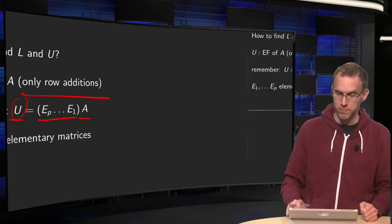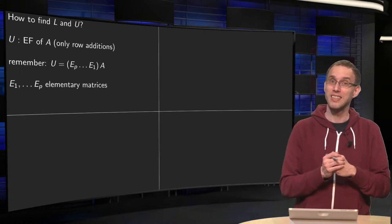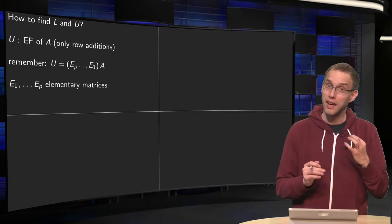That is the easy part. How to find the echelon form U, but how can we find the L matrix in an efficient way?